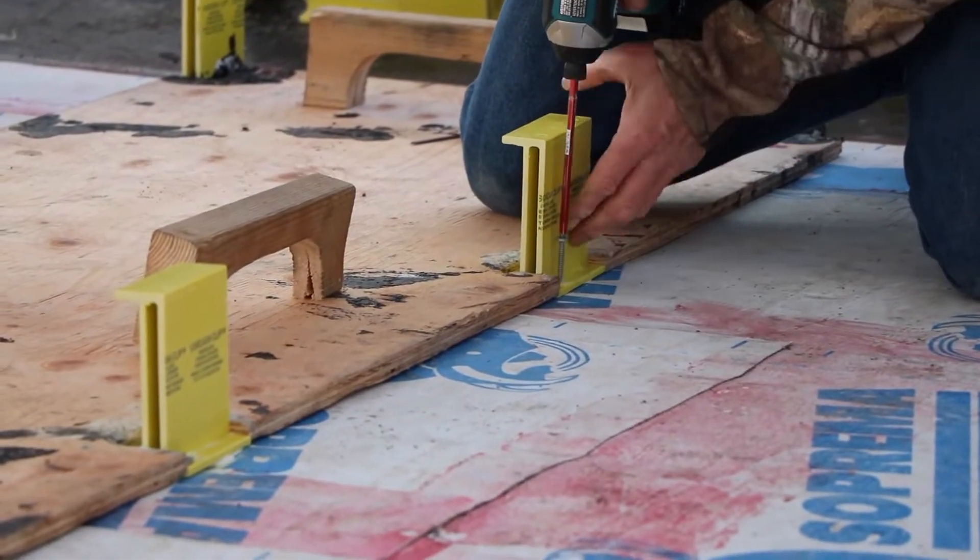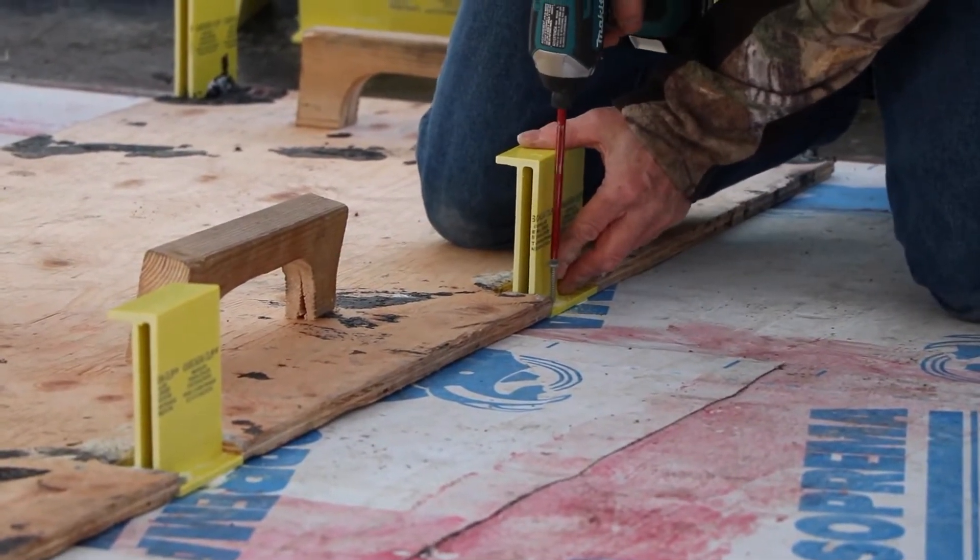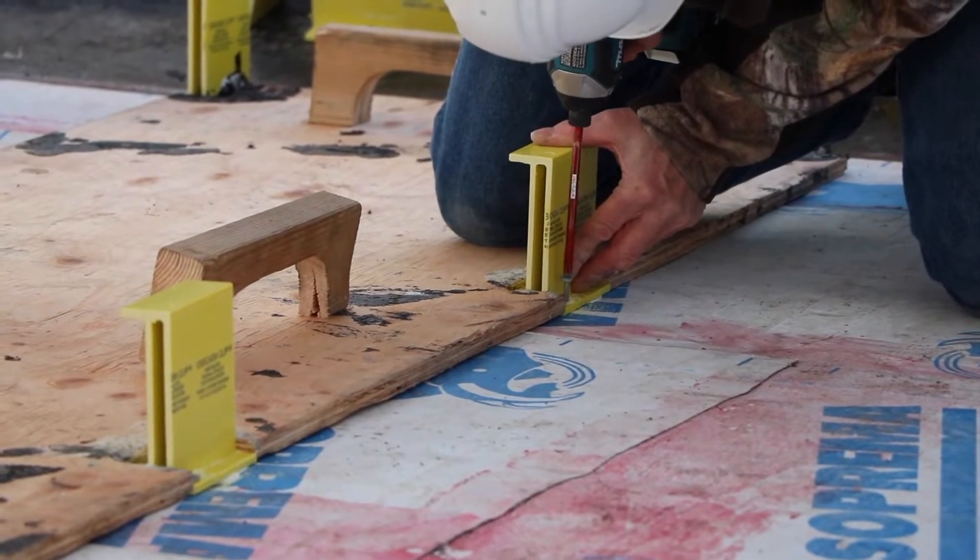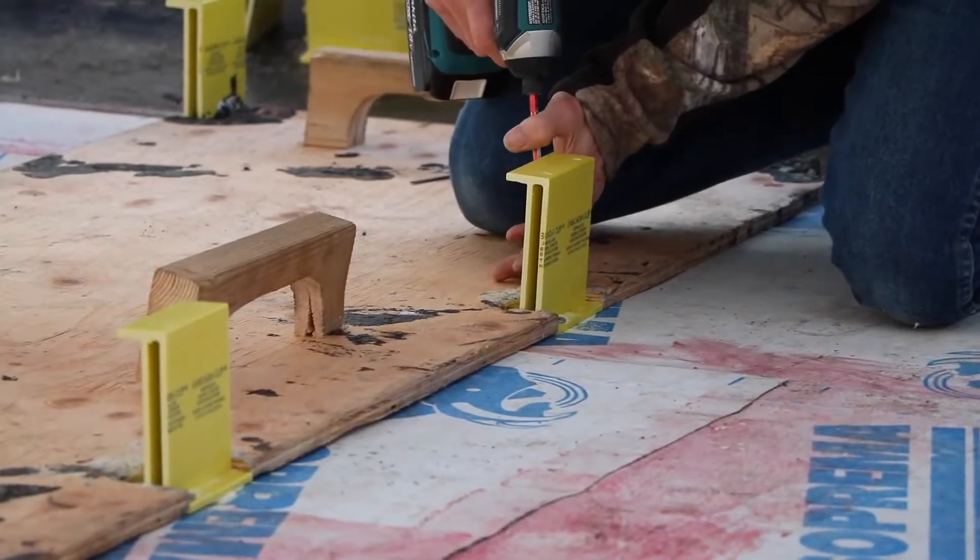Attach the screws to the roof sheathing by using two small screws at the base of the clip. This is just meant to keep the clips in place and is not the structural connection for the roofing panels.